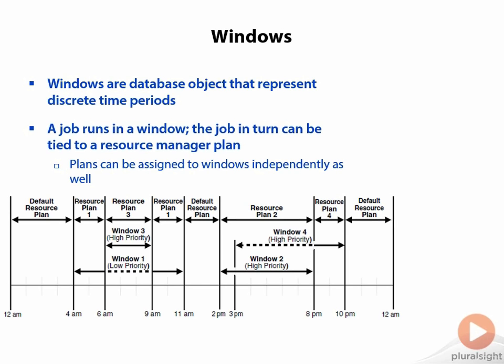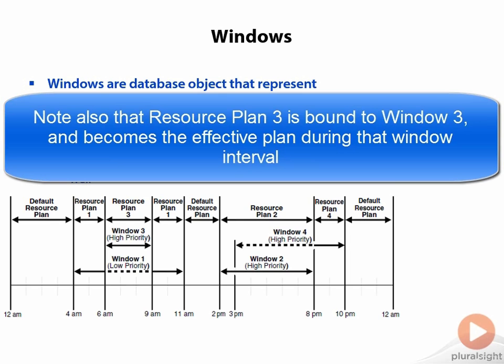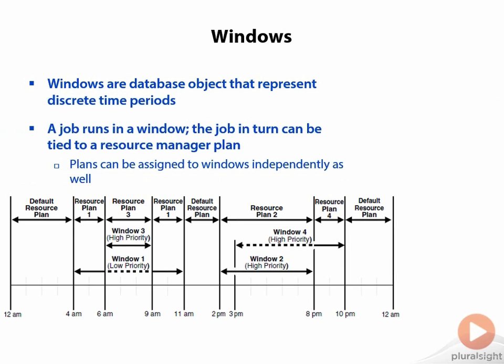However, you can override resource plan assignments by looking at windows. Window three, for instance, is running at a high priority between 6am and 9am, but that window is opening during the runtime of window one, which is scheduled as a low priority window. How do you determine the effective runtime environment if you have a particular job running in a window? The answer is the priority system. A high priority job would become the effective window during that period of time.